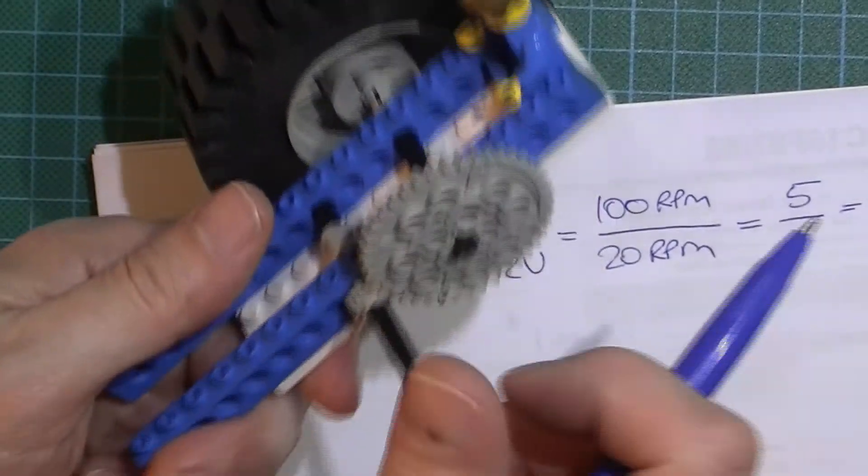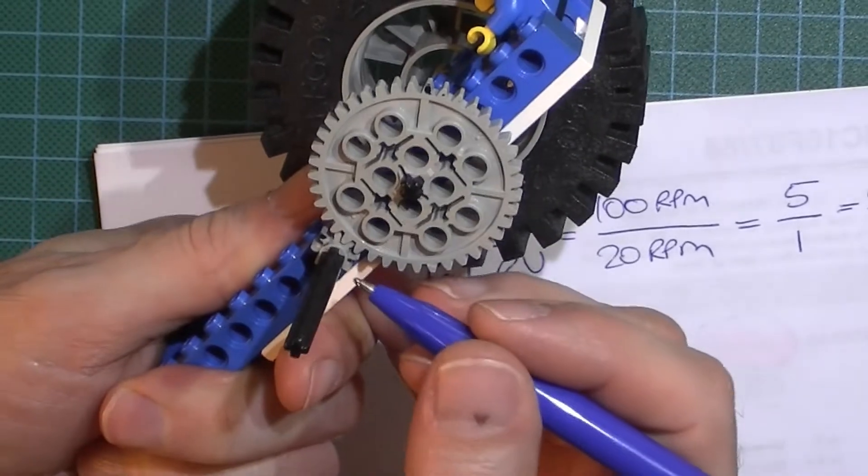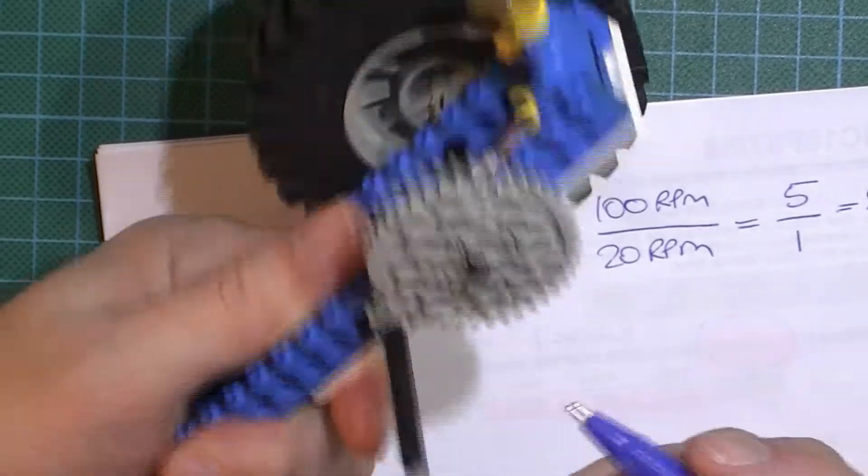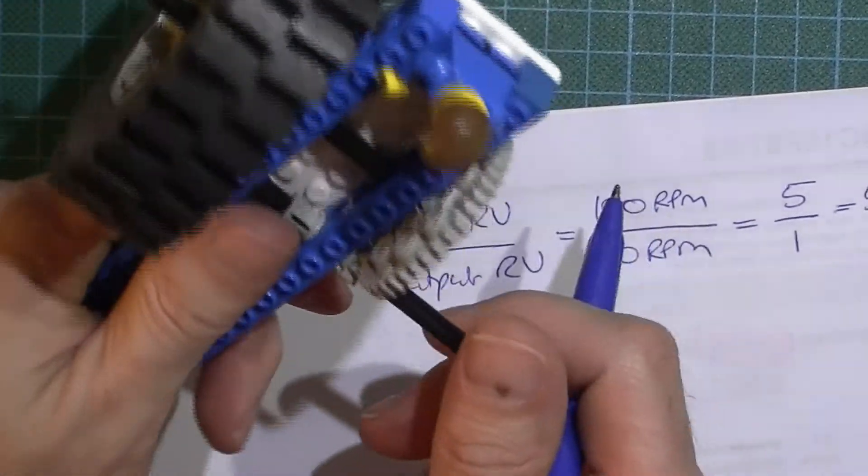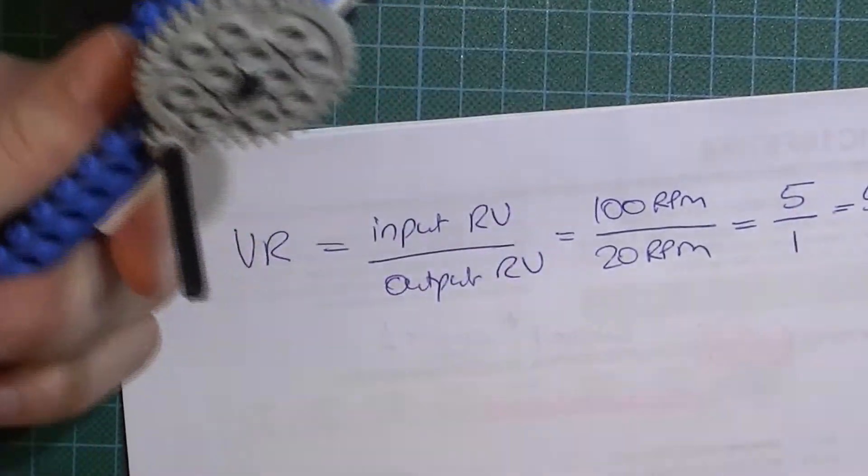What I find confuses students more often is that we often don't know the actual rotational velocity of either the input or the output, but we need to calculate the velocity ratio. So how can you calculate a velocity ratio if you don't know the velocities? Well, that's actually quite easy.